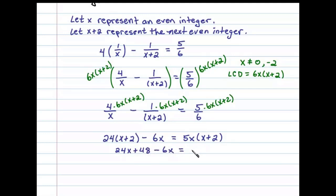Combining like terms, 24x - 6x is 18x, so 18x + 48 = 5x² + 10x.